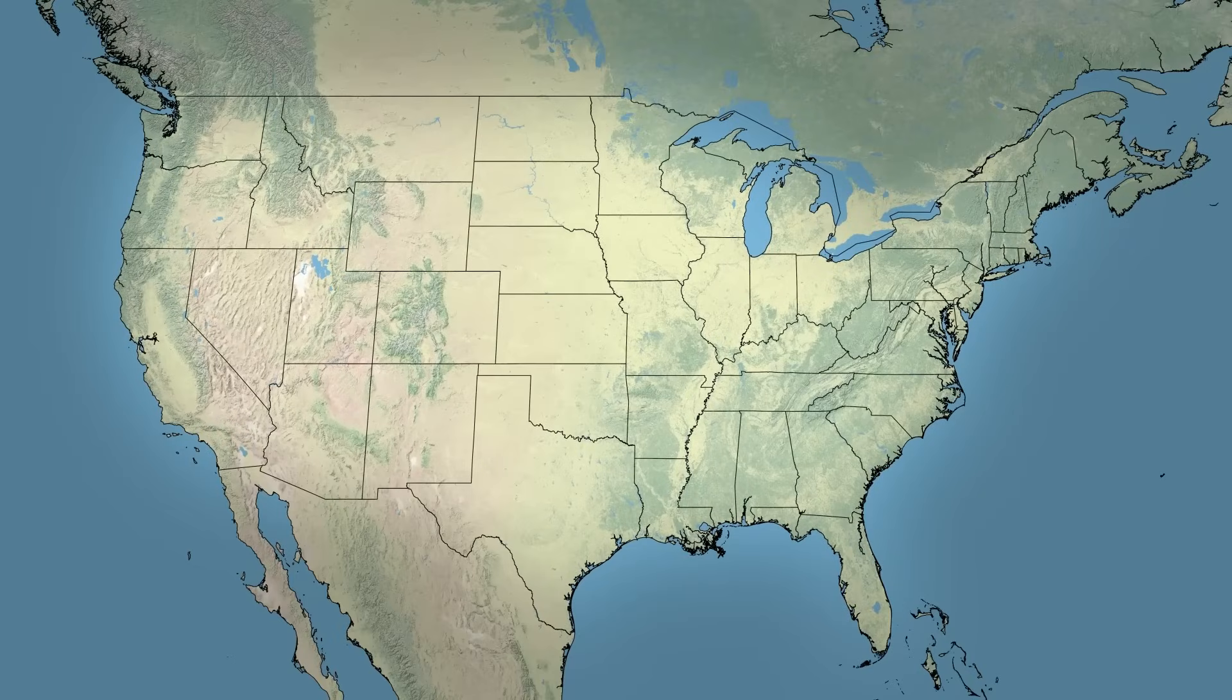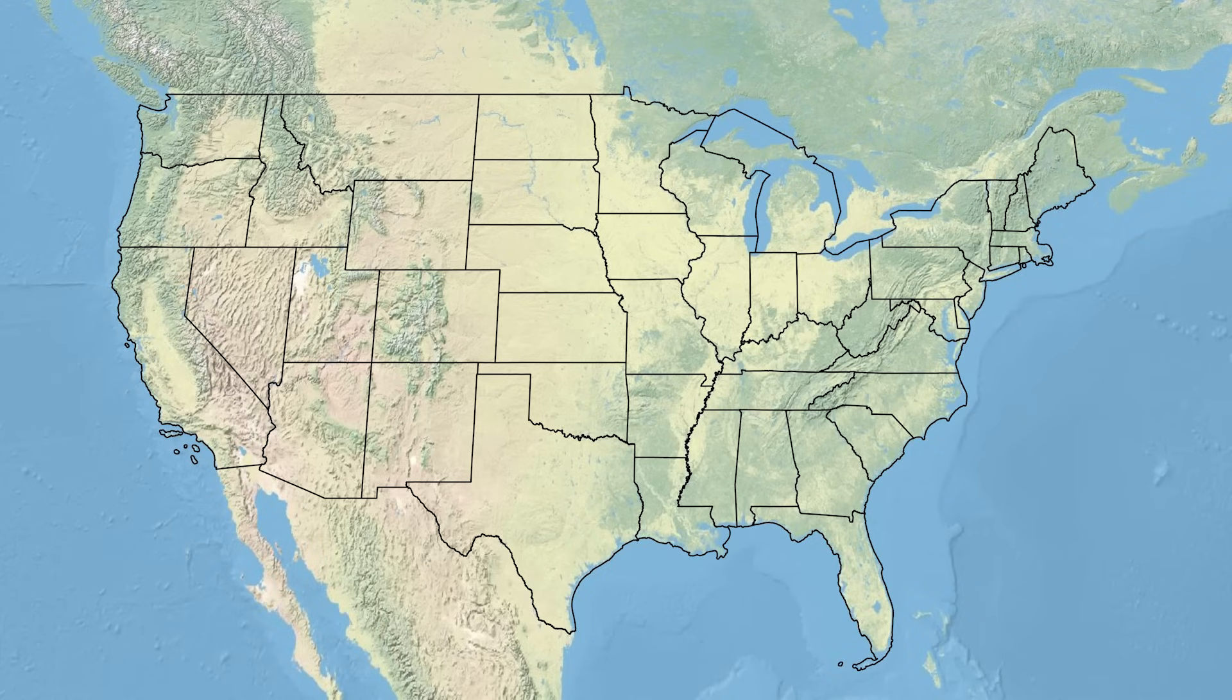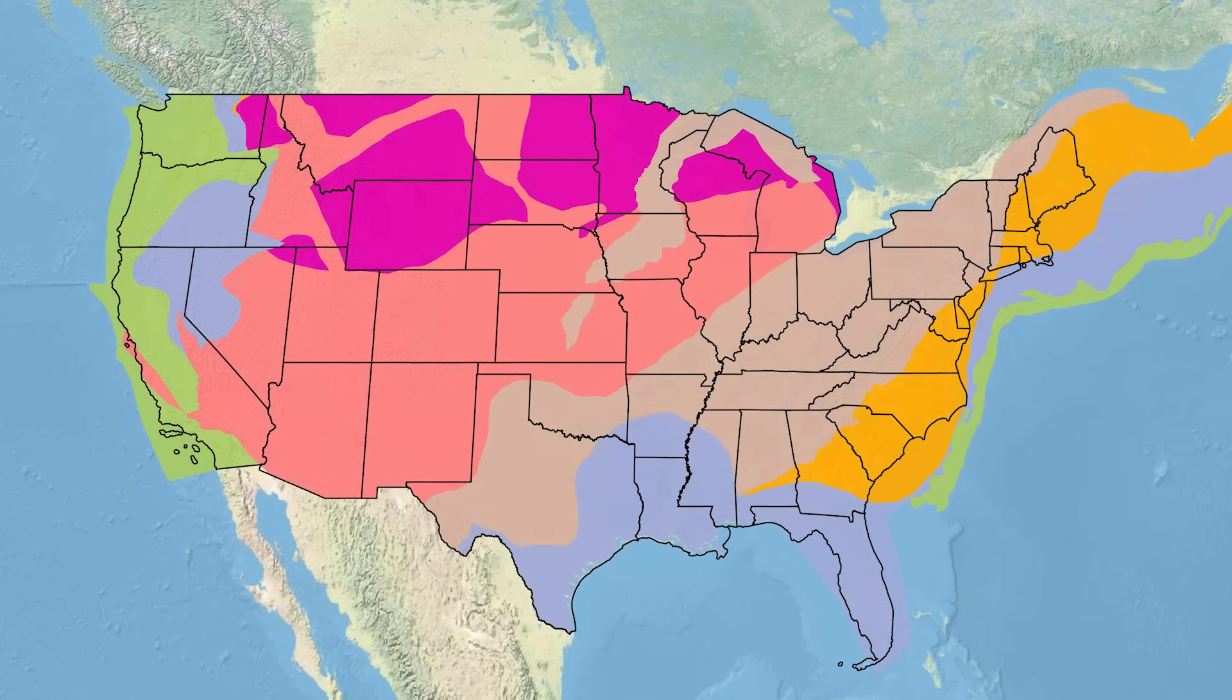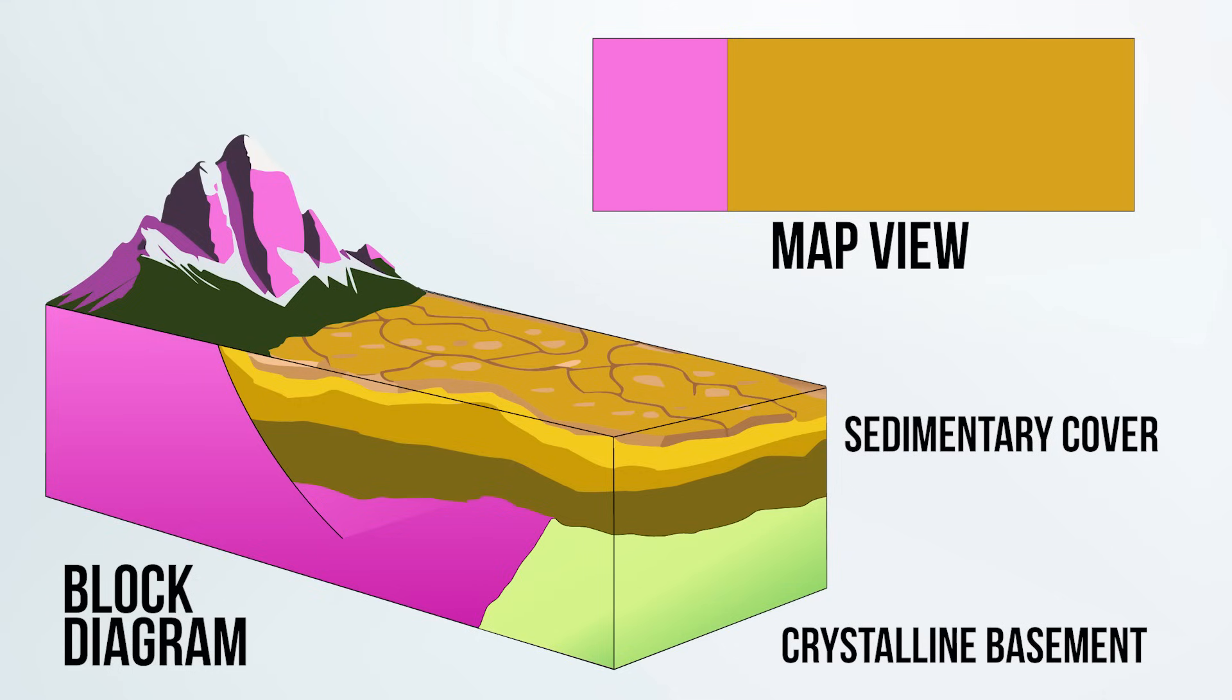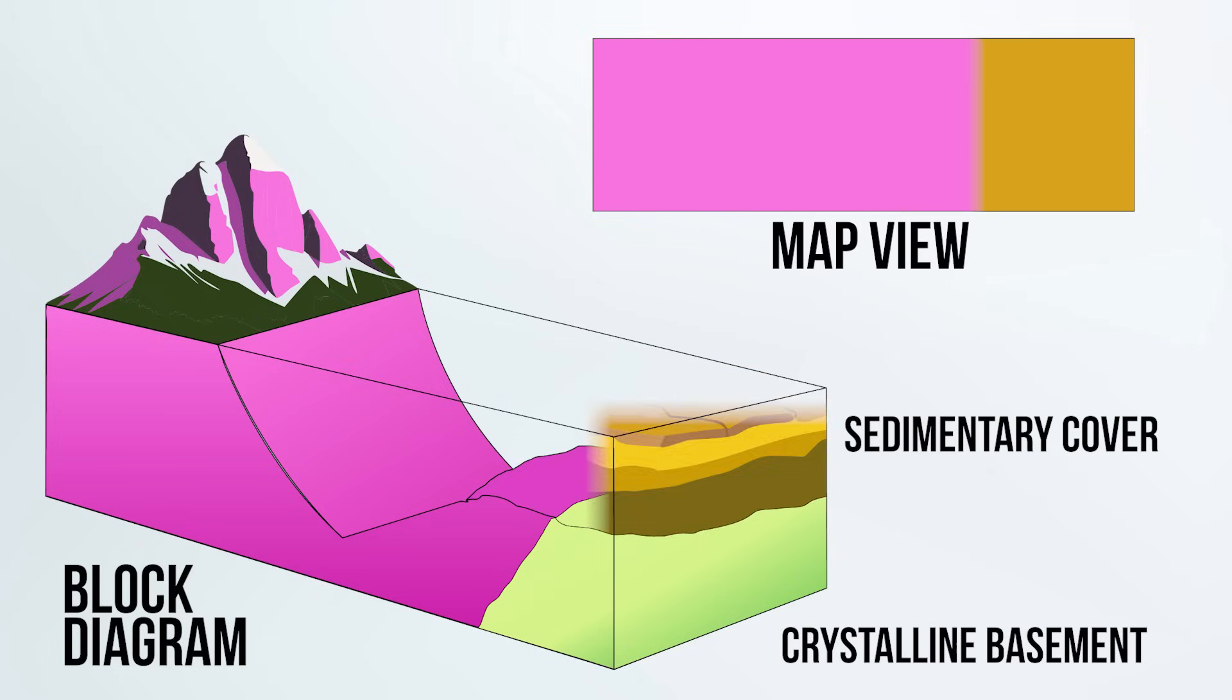To start, we need to look at a simplified geologic map. In this case, a basement map, which shows the age of the crystalline rocks of the continental crust. There are some areas in the U.S. where these crystalline rocks, or basement rocks, are already exposed. But what this map does is strip off the younger rocks that have been deposited on top of this basement.